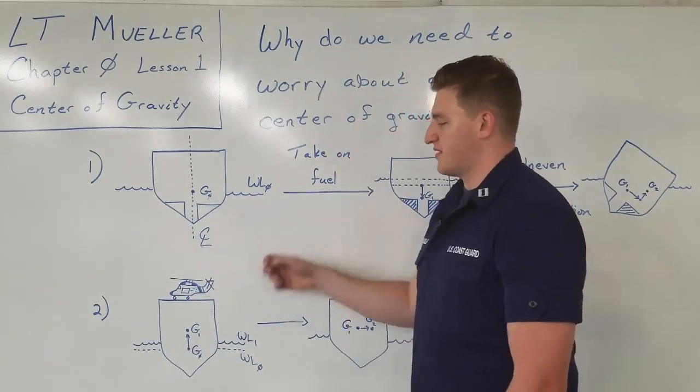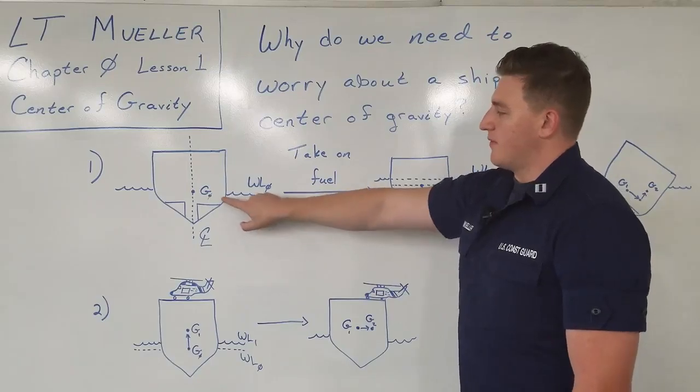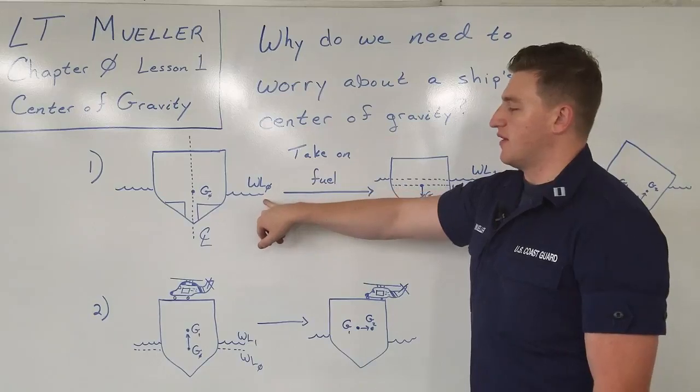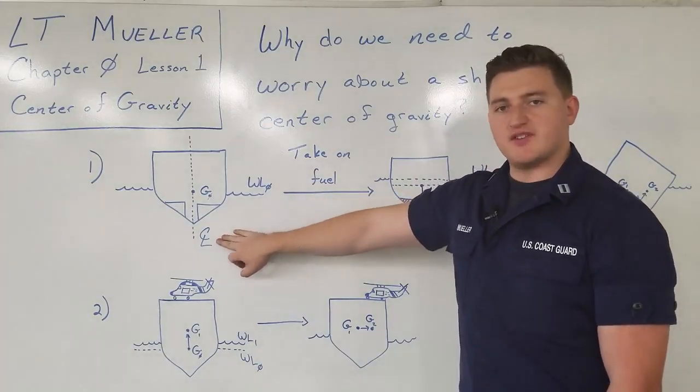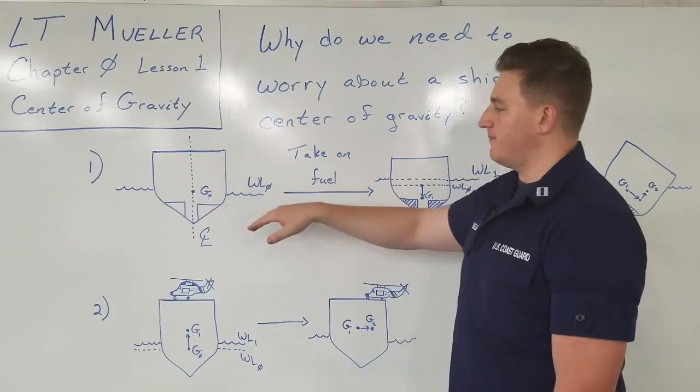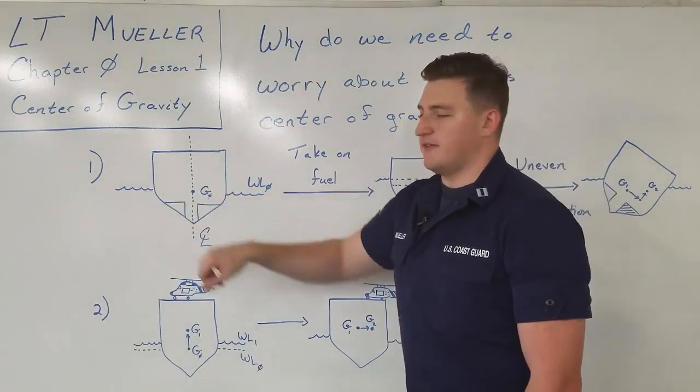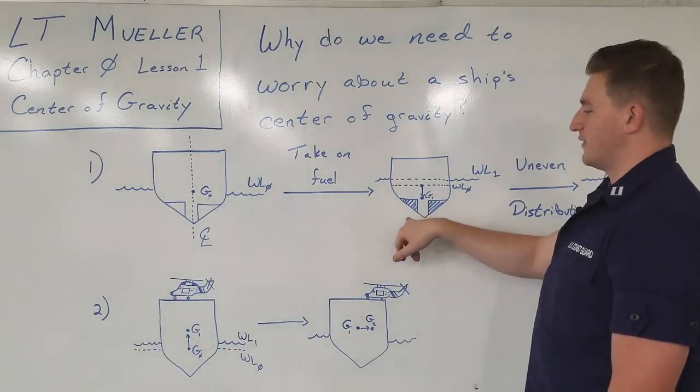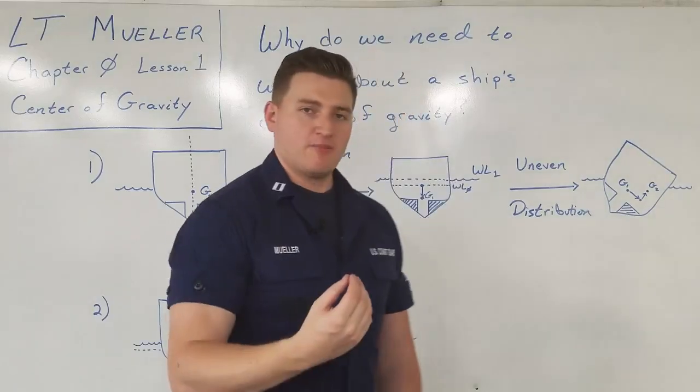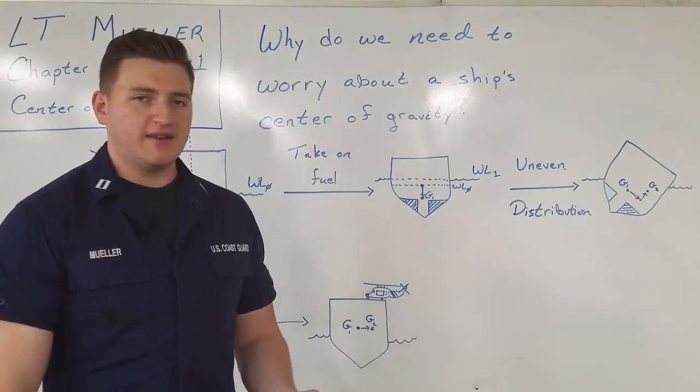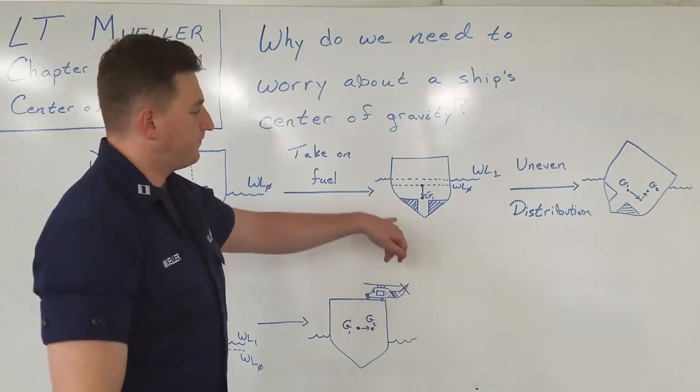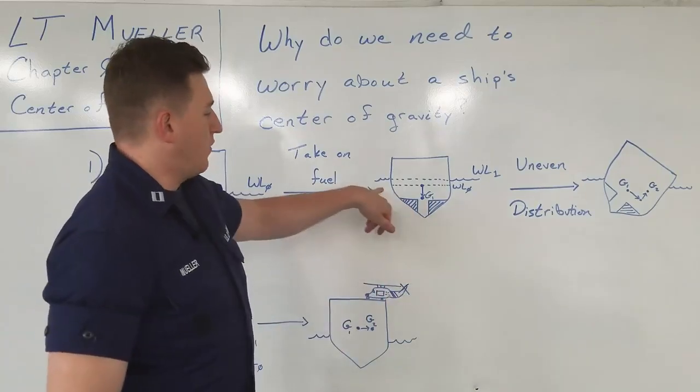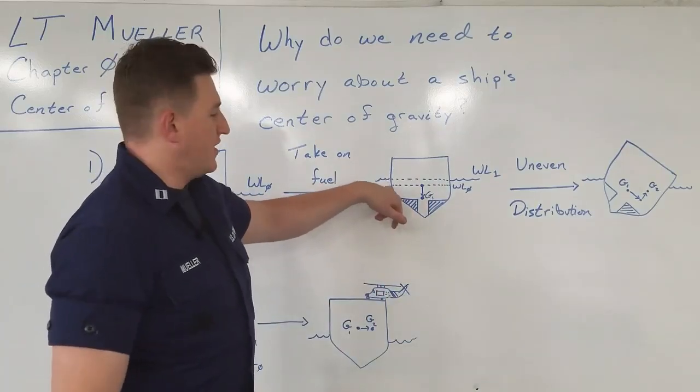So here we have two examples of a ship that's underway. In this one, we have a ship with a center of gravity, G0, and an initial waterline, waterline 0. This symbol here stands for the center line of the ship, and it just runs from the keel all the way to the very top, and is currently underway with two empty fuel tanks. Now it takes on fuel, and we fill those two fuel tanks. Since we've added weight down low, our pivot point, our center of gravity, is going to follow that weight addition, so it's going to get a little bit lower. We know that we're adding weight as well, and so the ship is going to become a little bit heavier, and so the waterline, by intuition, is going to rise a little bit.